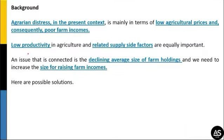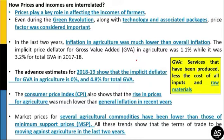Let's discuss the background of this article. The article talks about rural distress being mainly due to low agriculture prices, low productivity, and declining average farm holding size. The writer suggests better solutions. Price plays a key role in affecting farmers' incomes — even during the Green Revolution, technology and price were both considered important.